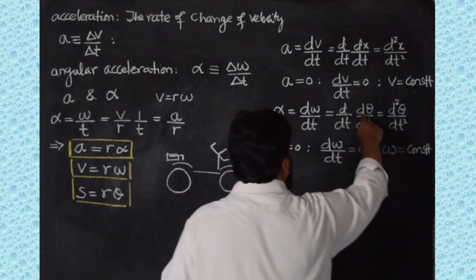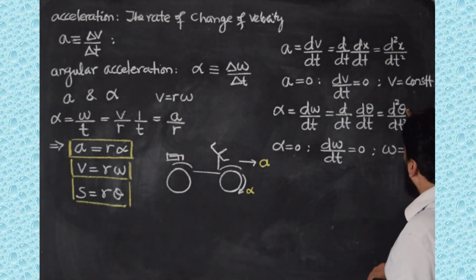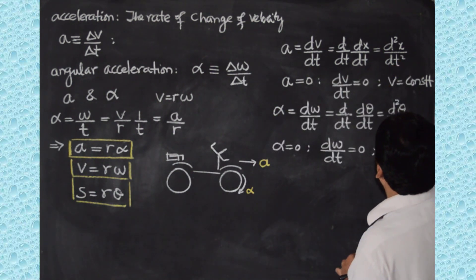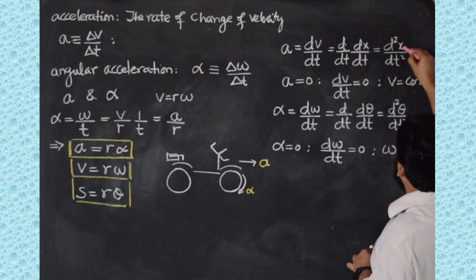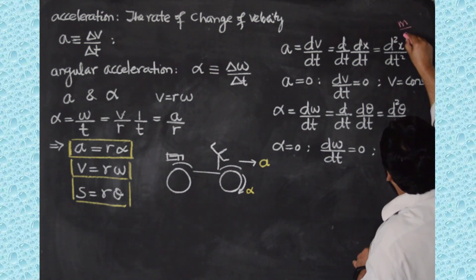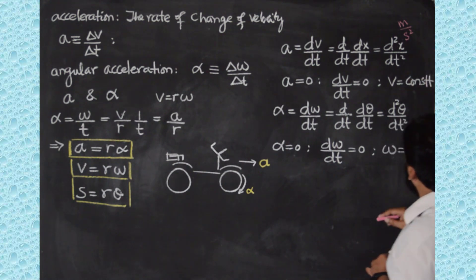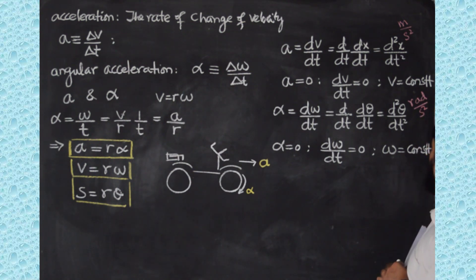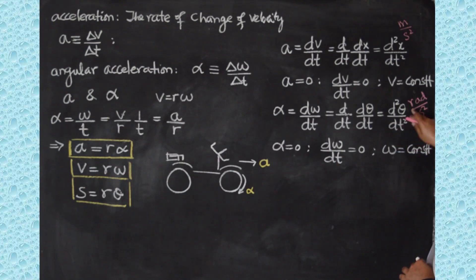Now, how are the units measured? From the relation a equals r·alpha, the unit of linear acceleration is meters per second squared. For angular acceleration alpha, since theta is in radians, the unit will be radians per second squared. So this is how we measure the magnitudes in these units.